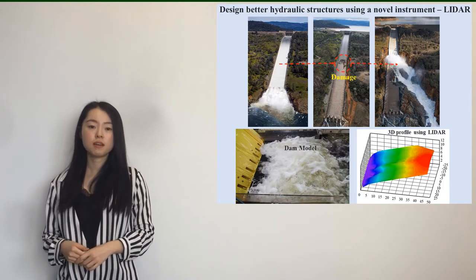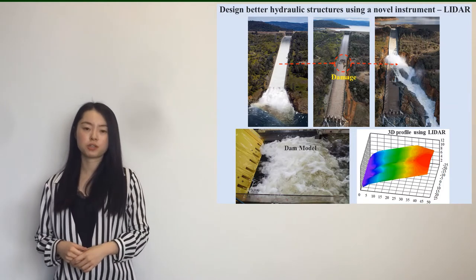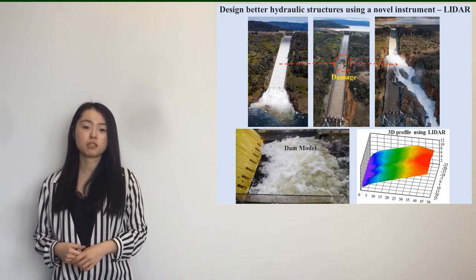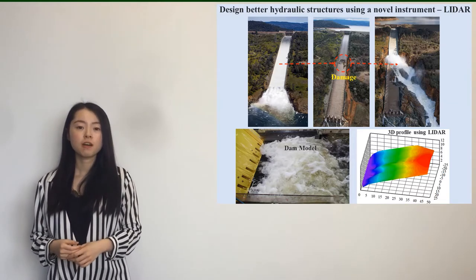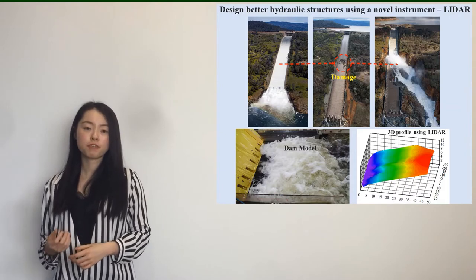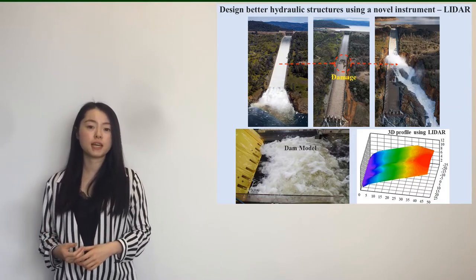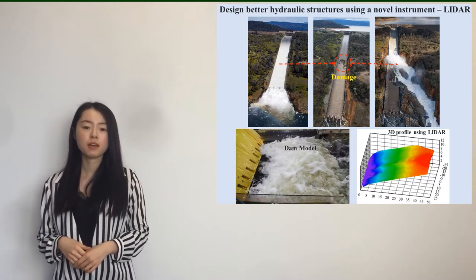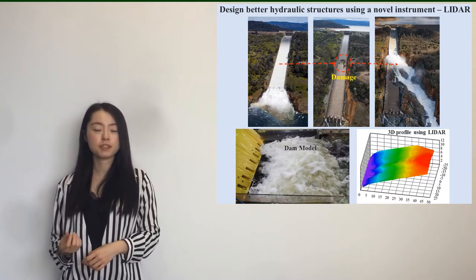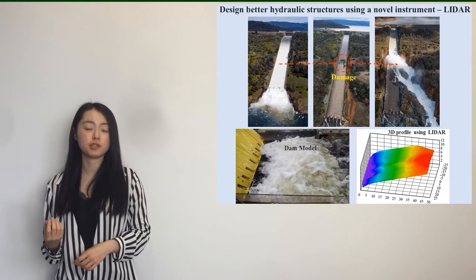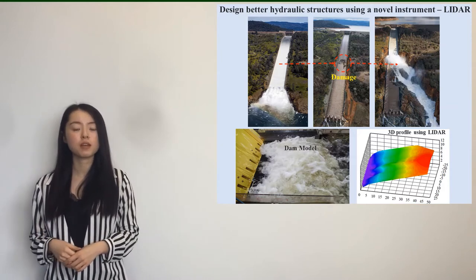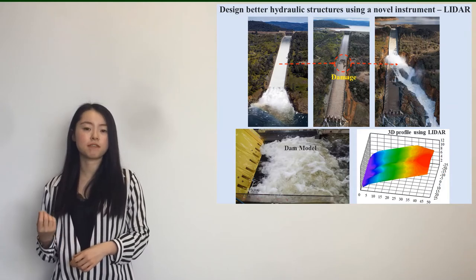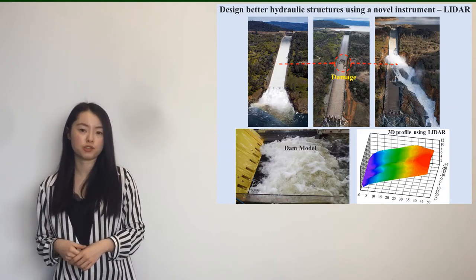As we all know, there were many failures of hydraulic structures around the world, which caused hundreds of deaths and severe damage to our infrastructure. For example, a small part of concrete on the spillway of Oroville Dam was lifted due to extreme pressures during a flooding event. More than a hundred people also lost their lives due to a dam failure in 2019 in Laos. Some of these catastrophic failures might have been prevented if the structures had been properly designed before construction.